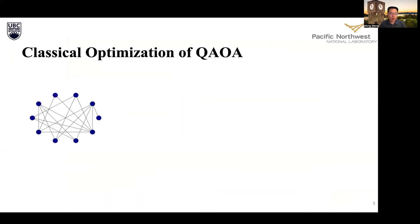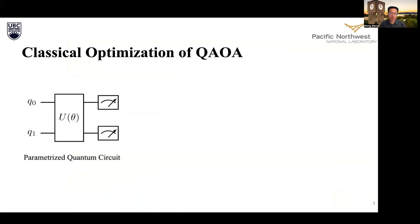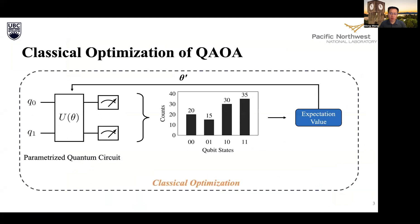To begin, QAOA generates a parametrized quantum circuit from the graph. Then it runs and gets the results, and uses that result to iteratively update the parameters, ideally converging to an optimal solution.